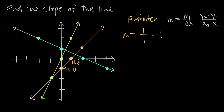The slope of this line is 1, and I can apply that anywhere on the line. So if I start at the point (1, 0), I go up one unit and over one unit, and I arrive at the next point. That continues to hold — up one unit, over one unit. And I can go the other direction: if I want to get to a lower point along the line, I go down one unit and then over one unit to the left.